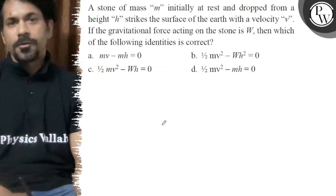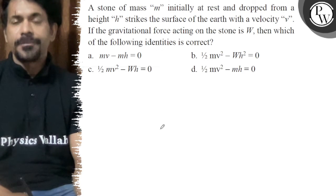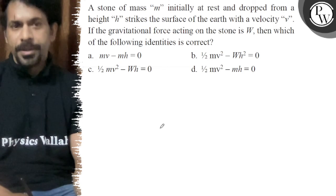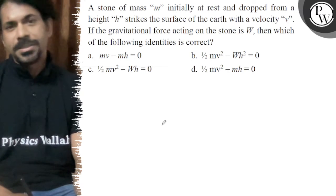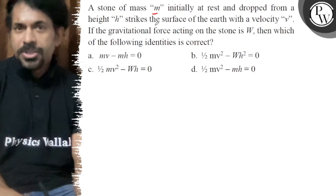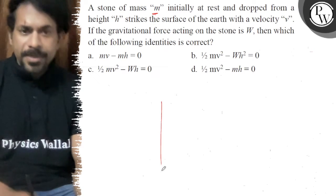Hello, let's see the question. A stone of mass m initially at rest is dropped from a height h and strikes the surface of the earth with velocity v. If the gravitational force acting on the stone is W, then which of the following identities is correct? So, mass m initially at rest is dropped from height h.